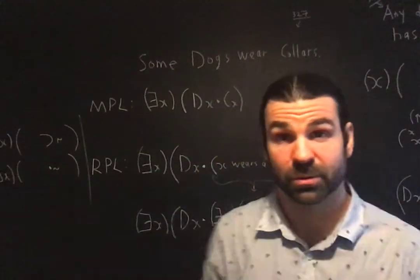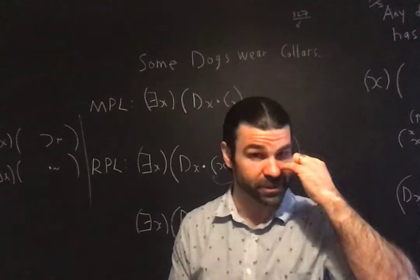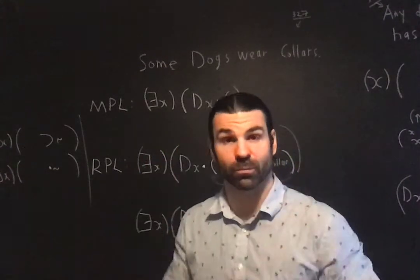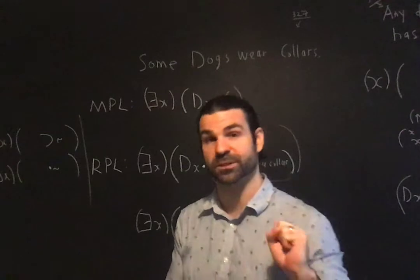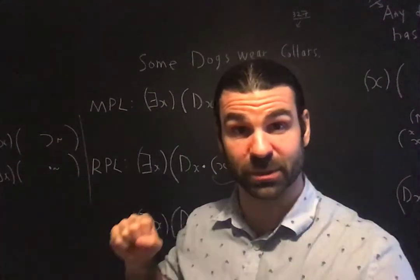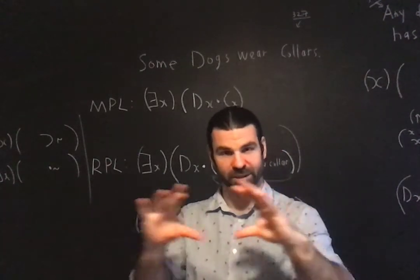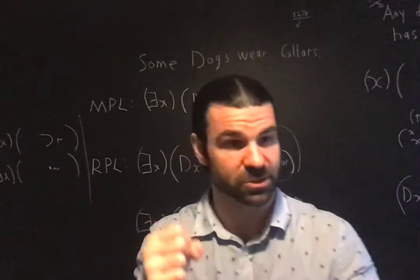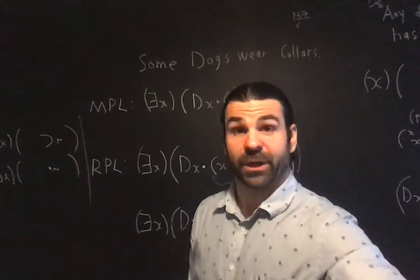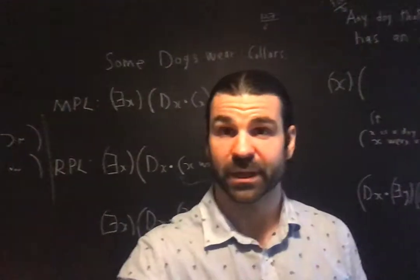It is very important, it's a very crucial lesson to have the overall form in place. And especially to hold on to the connection between universal quantifier and the hook, and the existential and the dot. For existential, very likely the major operator of the propositional function should be the dot. Consider the sentence, some dogs wear collars.